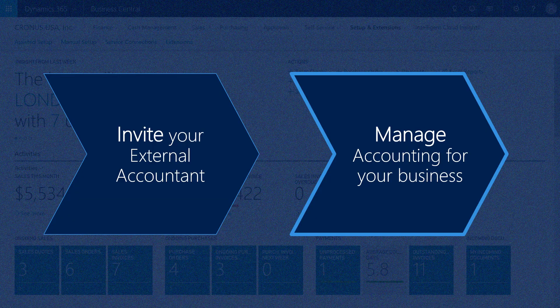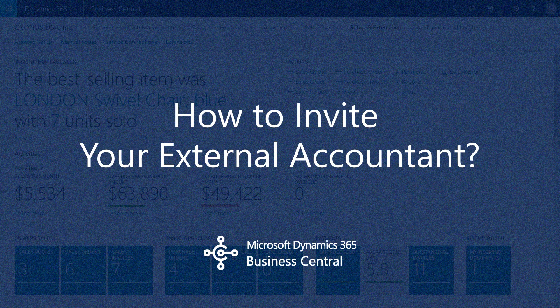If you use an external accountant to manage your books and financial reporting, you can invite them to your Business Central system so they can work with you on your fiscal data. Once your external accountant has gained access, they can use the accountant role center, which gives easy access to the most relevant windows for their work.